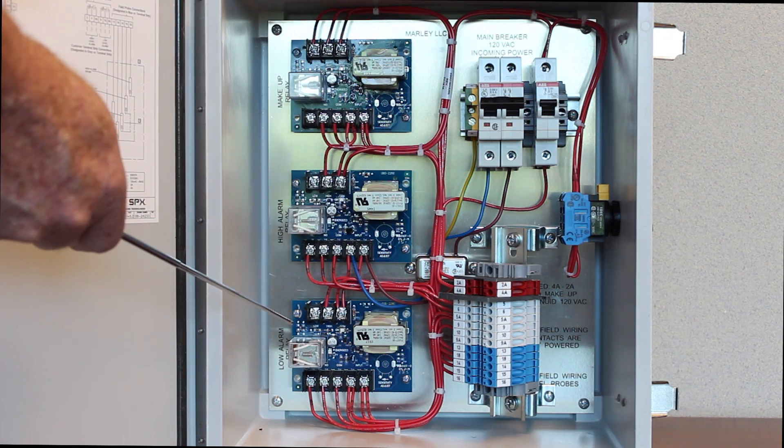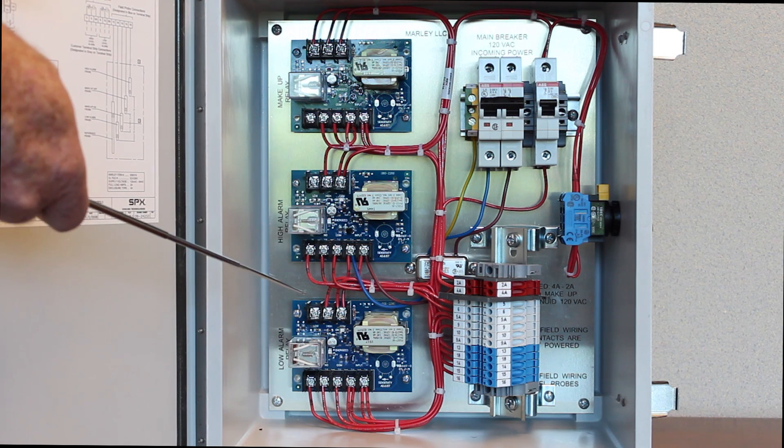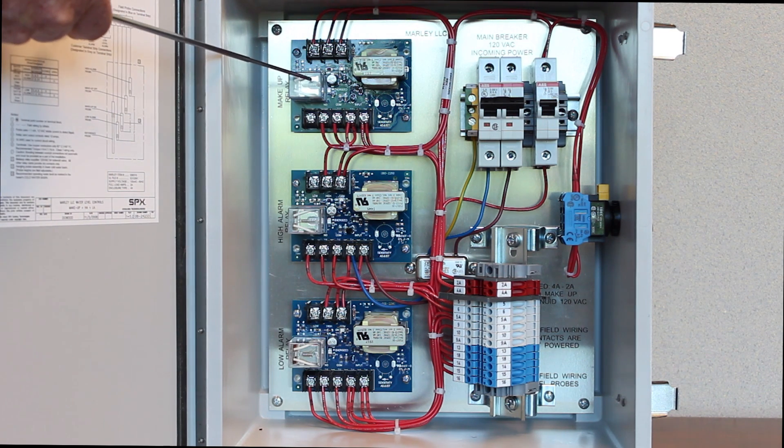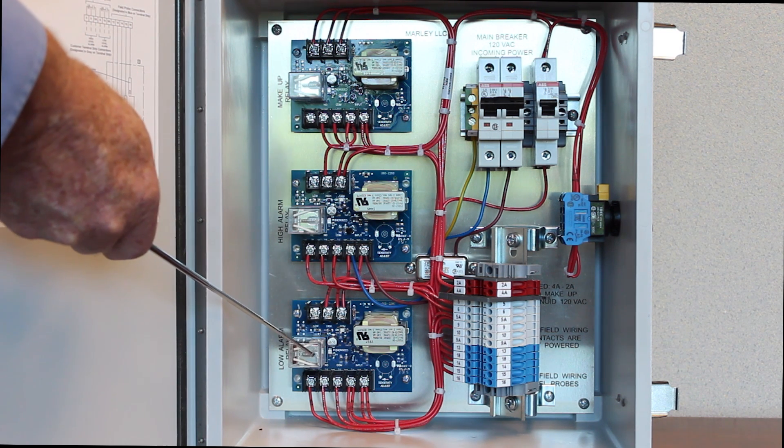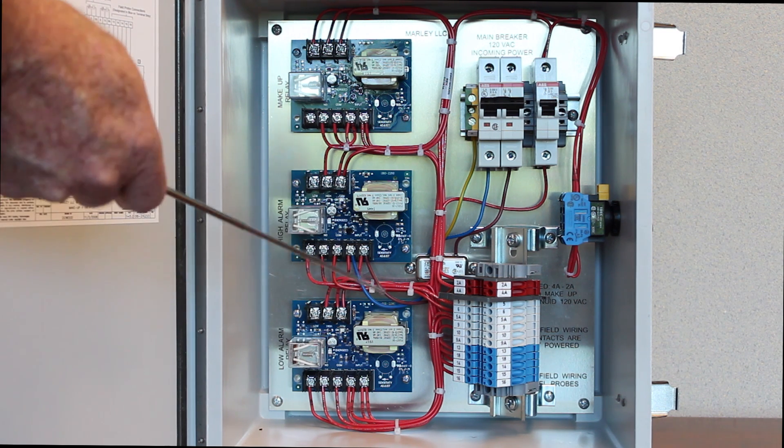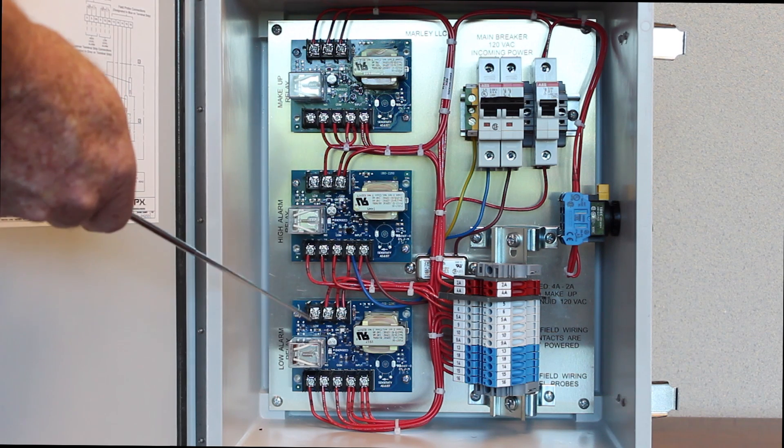Each card represents a particular level such as in this configuration. The top card is a makeup card, then we have a high alarm card and we have a low alarm card. You can also get these panels with two additional cards. The enclosure would just be larger.